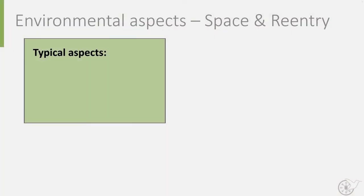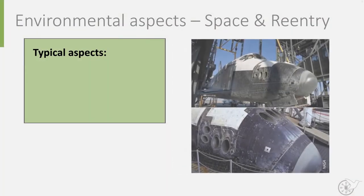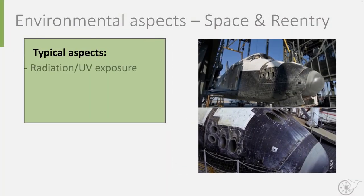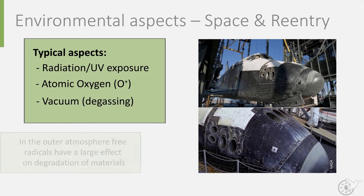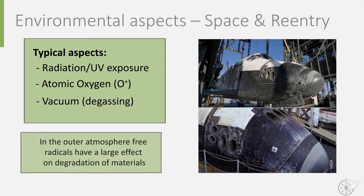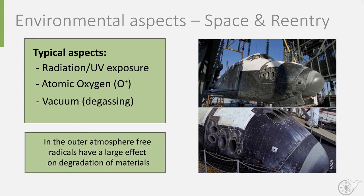Other environmental factors to consider, especially in space, are radiation and ultraviolet or UV light exposure, atomic oxygen, and vacuum. In the outer atmosphere, free radicals and especially atomic oxygen have a large effect on the degradation of materials.